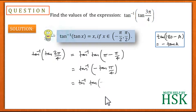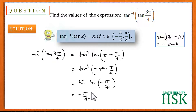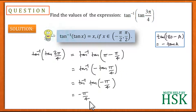Further, I know that tan(-θ) = -tan θ, so I can write this as tan⁻¹(tan(-π/4)). Since -π/4 belongs to the interval (-π/2, π/2), I can write this as equal to -π/4, which is our answer.